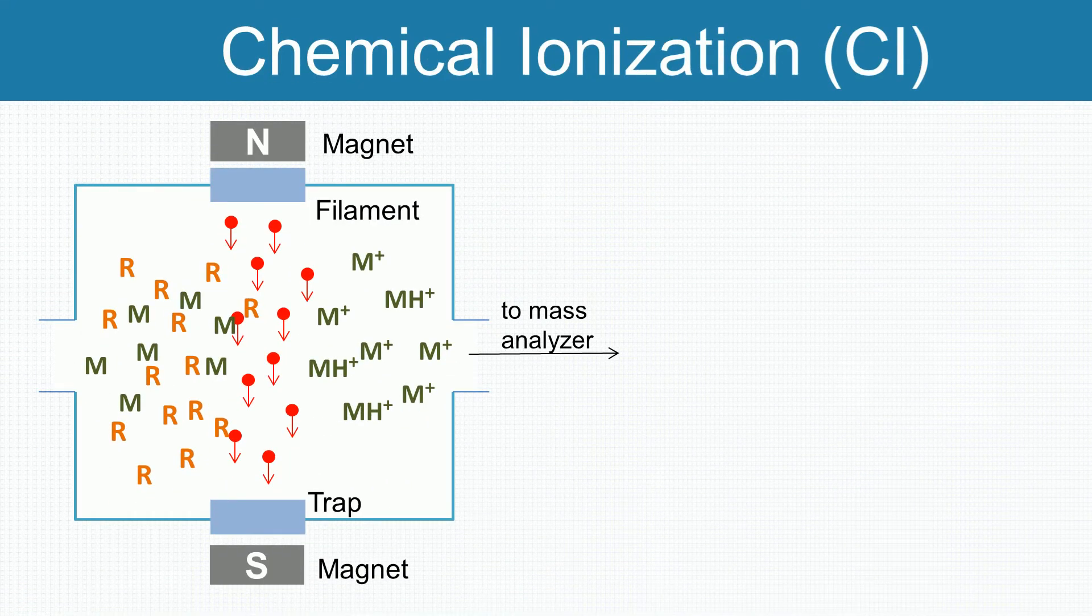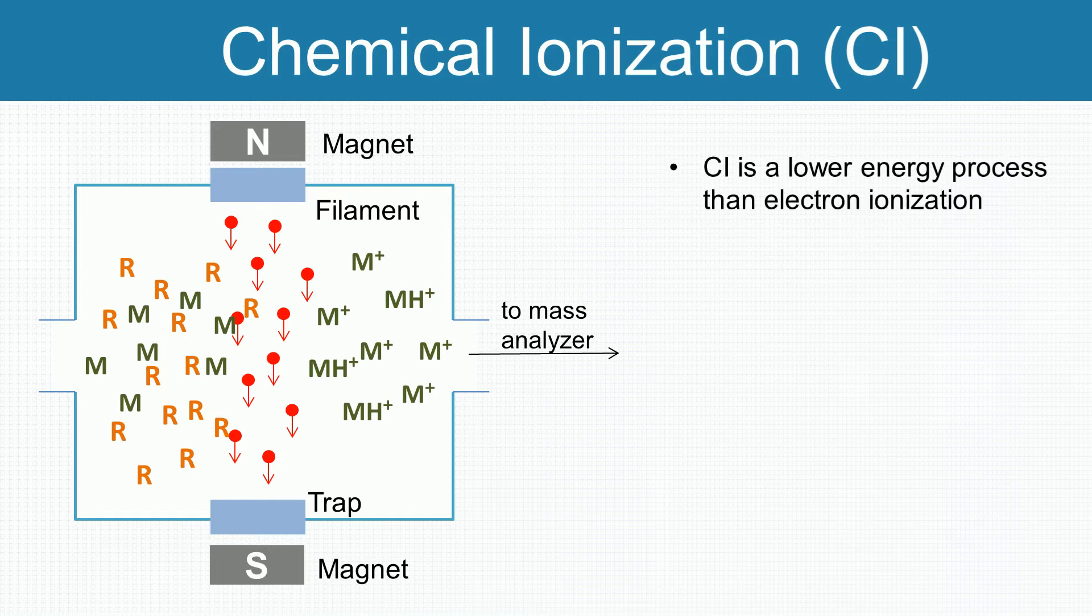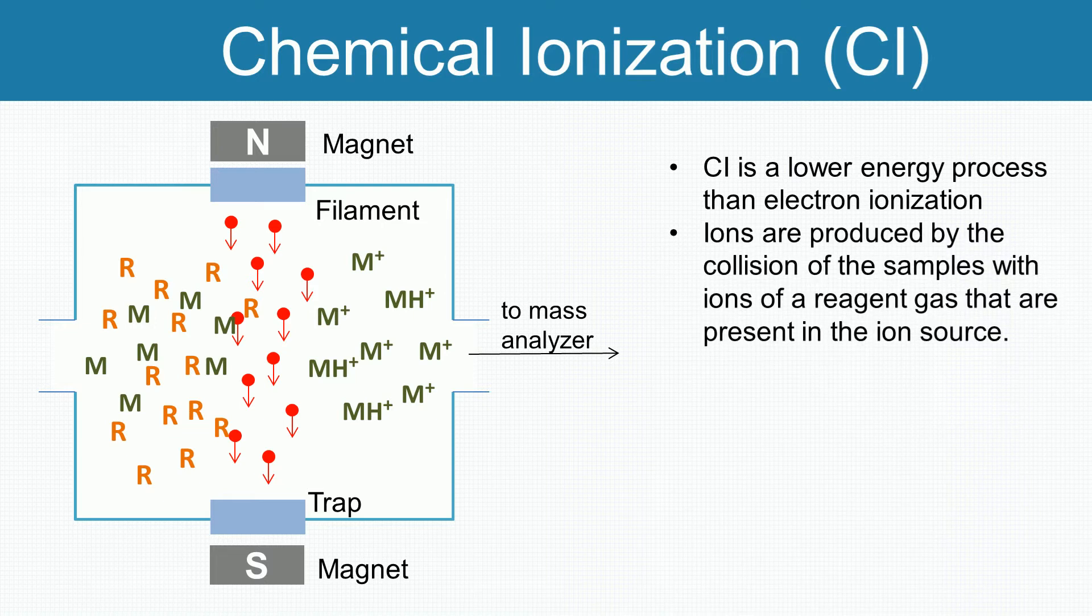Chemical ionization is very similar to electron ionization. It is a lower energy process than electron ionization. In chemical ionization, ions are produced by the collision of the samples with ions of a reagent gas that are present in the ion source.